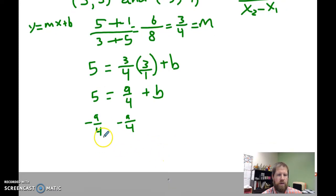And this is where I'm going to want to convert my 5, my 5 over 1 to 20 over 4, and then subtract the 9, which will give me 11 fourths is equal to b. So that's my y-intercept, 11 fourths. That's kind of ugly, but we should be able to still work with that.